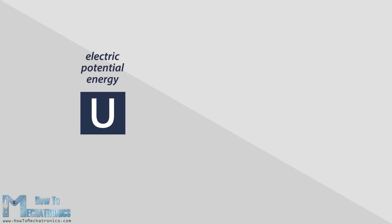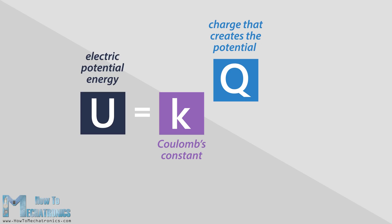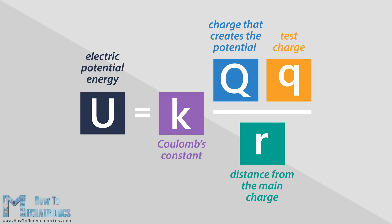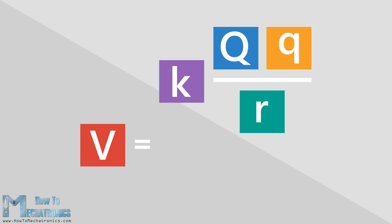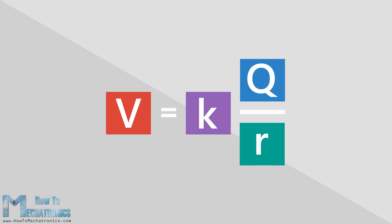The electric potential energy is equal to Coulomb's constant K multiplied by the charge that creates the potential, big Q, times the charge that would be placed at a point some distance away from the main charge, small q, and divided by the distance R. In order to calculate the electric potential, we just need to divide the potential energy by small q. Here we can notice that small q appears twice in the equation, so we can cancel it out, which leaves us with this simple equation.